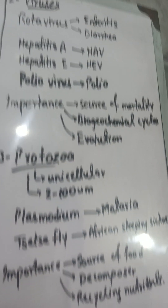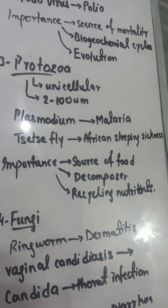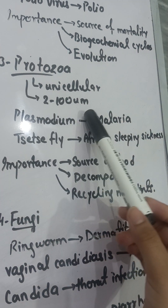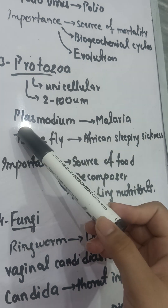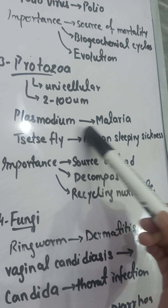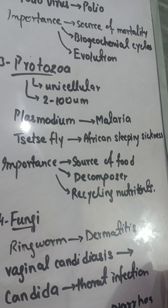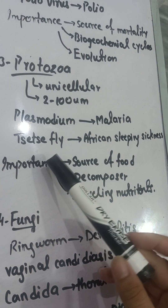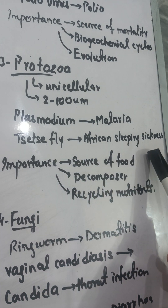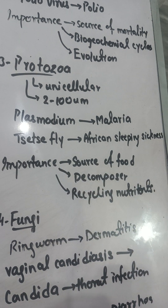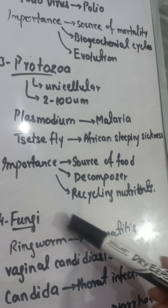The third microorganism present in water is protozoa — unicellular organisms with a diameter of 2 to 100 micrometers. Plasmodium causes malaria — it first infects the Anopheles mosquito and then transfers to human beings. The tsetse fly causes African sleeping sickness disease. Protozoa are also an important source of food for other marine plants and animals, acting as decomposers and helping recycle nutrients back to the water.